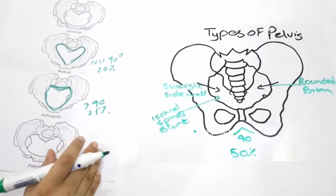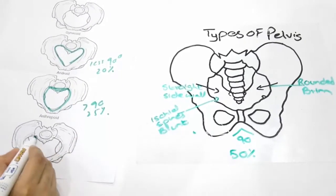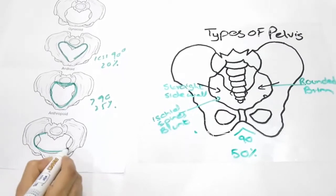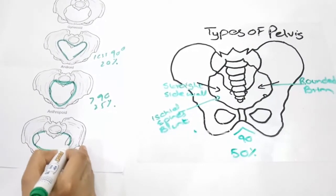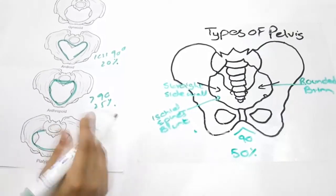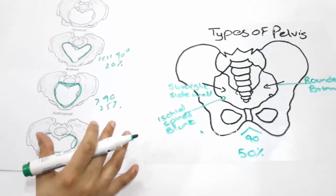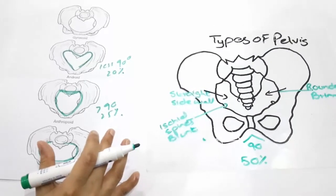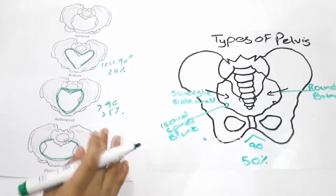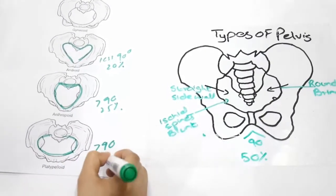Platypelloid pelvis: It has a kidney-shaped brim. The fore pelvis is wide, the sidewalls are divergent, ischial spines are blunt, sciatic notch is wide, and the sub-pubic angle is greater than 90 degrees. It has an incidence rate of 5%.